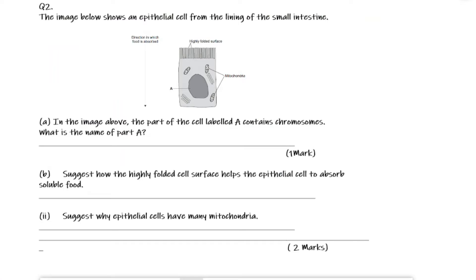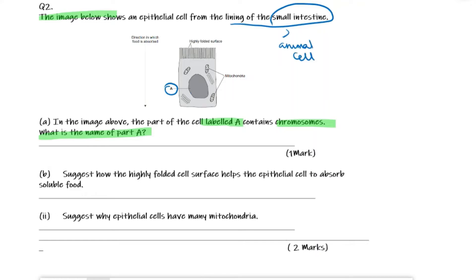Question two: the image below shows an epithelial cell from the lining of the small intestines. The part of the cell labelled A contains chromosomes — what is the name of part A? The lining of the small intestines would be an animal cell. The labels of an animal cell include cell membrane, cytoplasm, mitochondria (already shown), and this would be the nucleus.